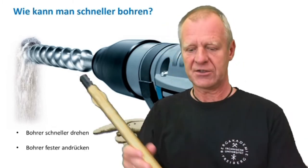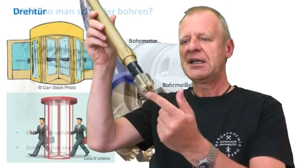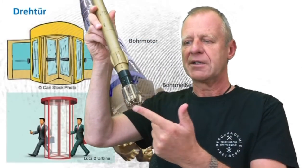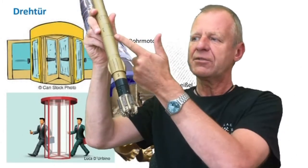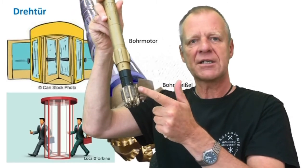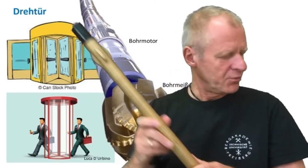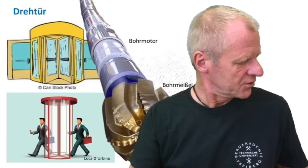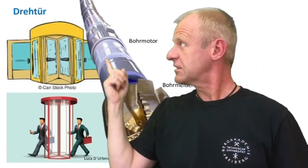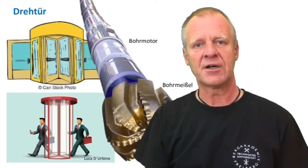If we can't rotate the drill string quicker from the top, then we have to do it from the bottom. This is why we have something in the string called the mud motor, and this device is located directly above the drill bit. This motor, in a simple sense,